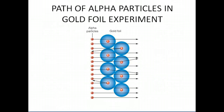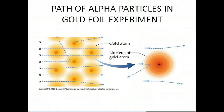This picture shows the path of the alpha particles in the gold foil experiment. Most of the alpha particles went straight through the gold foil — they were not bent or deflected in any way. There were a few that were deflected, and some were actually deflected straight back. Those deflected back hit the nucleus head-on, while those deflected a small amount scraped the side of the nucleus. Again, most alpha particles went straight through.